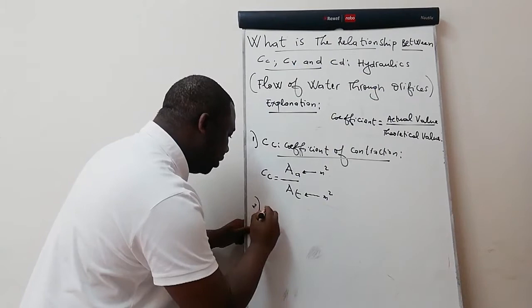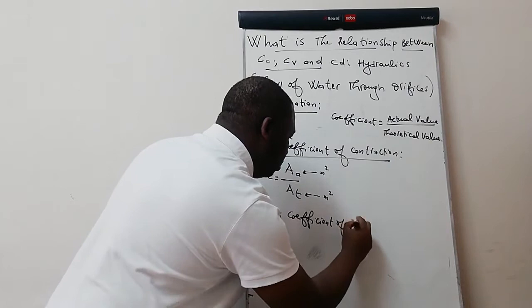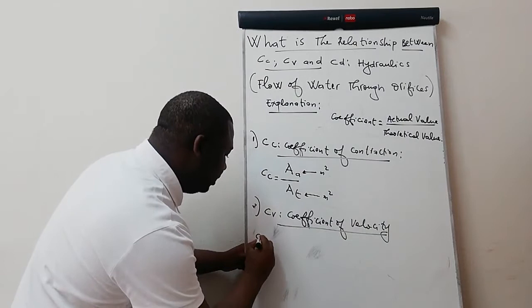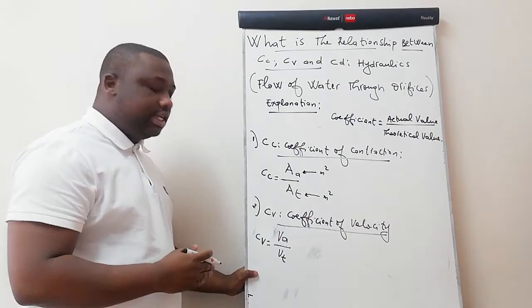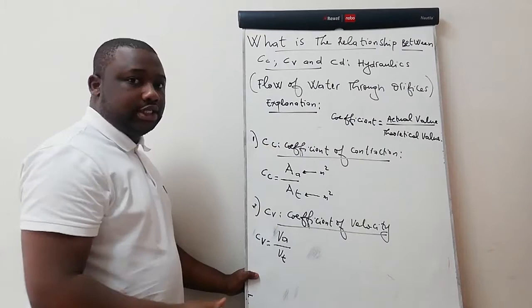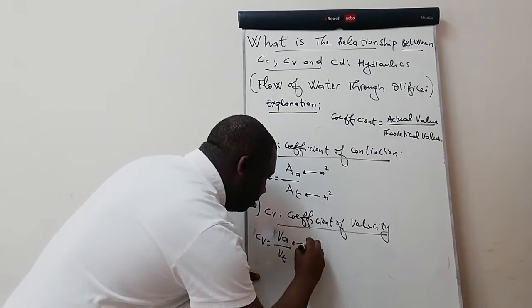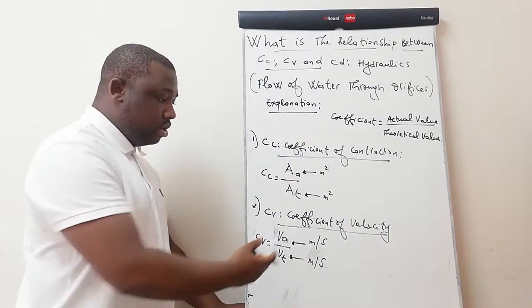Number two: CV, which is your coefficient of velocity. By definition, CV is equal to VA over VT — VA is the actual velocity of the jet, and VT is the theoretical velocity of the jet. Just as we said, to find your coefficient, you do the actual value over the theoretical value. Your actual velocity should be in meters per second, and your theoretical velocity should also be in meters per second, so CV won't have a unit.